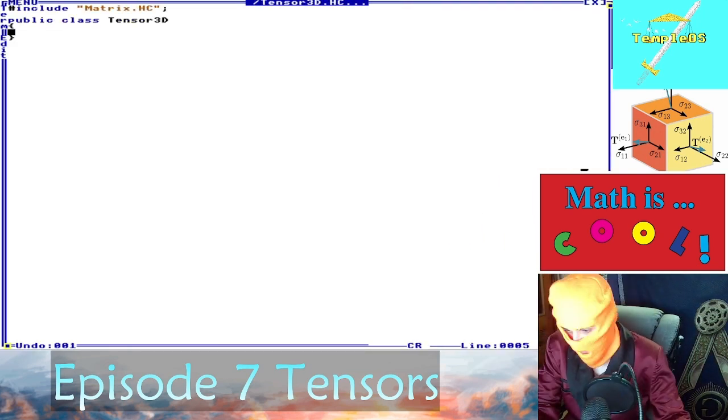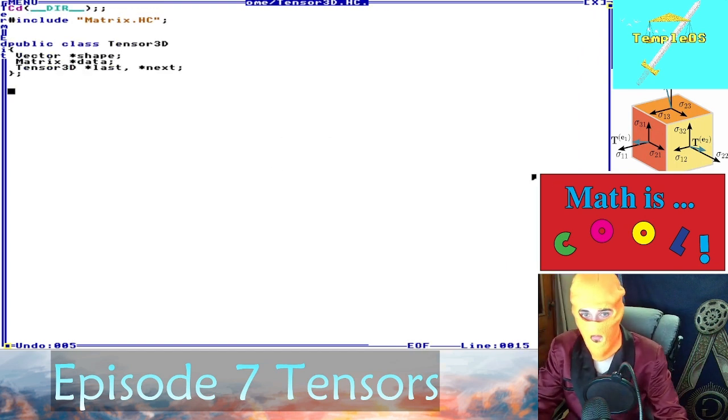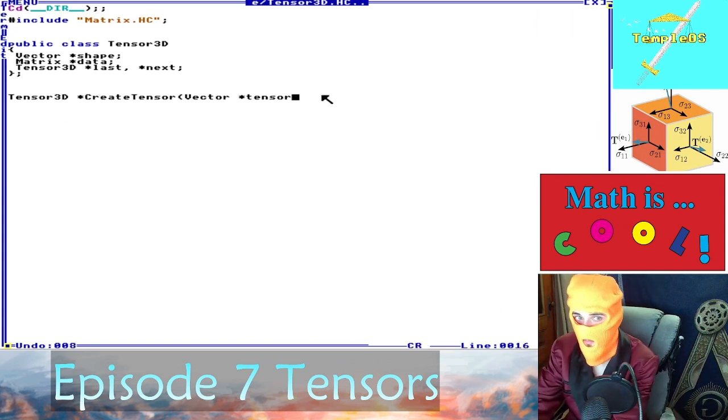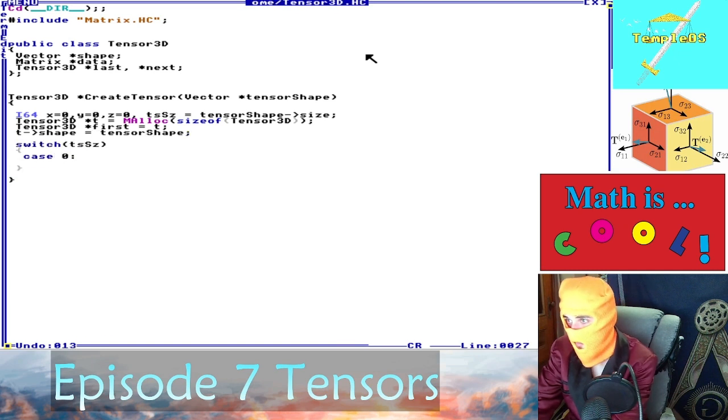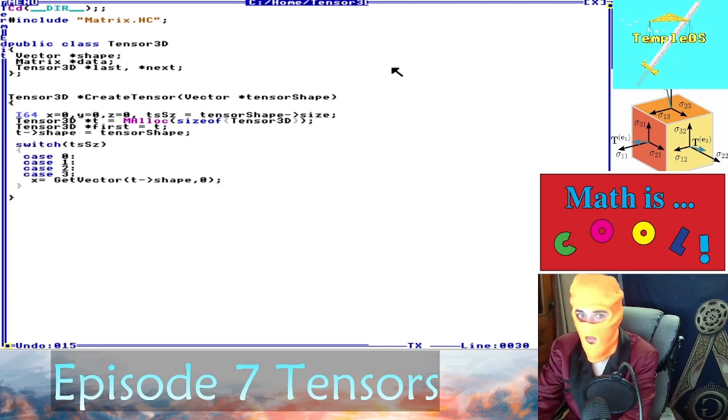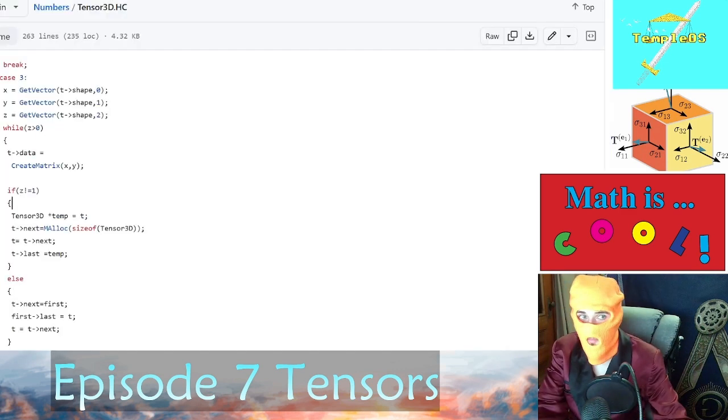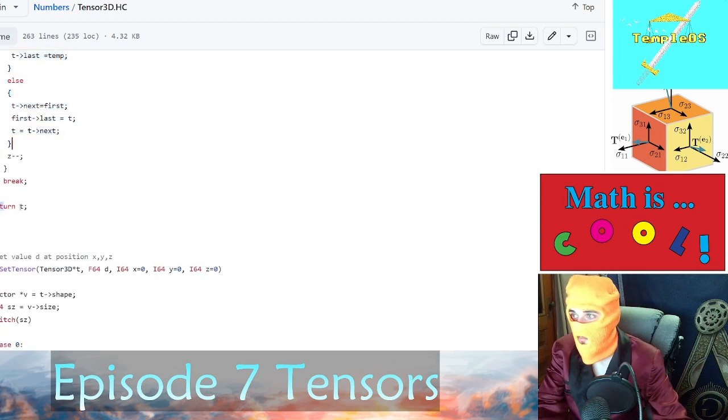Hopping into the code here, we have to include the matrix code from last time. That's a requirement. We declare our tensor object, so it takes a shape as well as the data. The data contains the values, whereas the shape, if it's 50 by 50 by 3, is passed in as a vector parameter. Here we extract the size and then allocate the appropriate amount of memory depending on the size. If it's rank 0, rank 1, we're only worrying about rank 3 right now. We grab the size, set the data, create a matrix according to x y, and we create z many of those matrices.